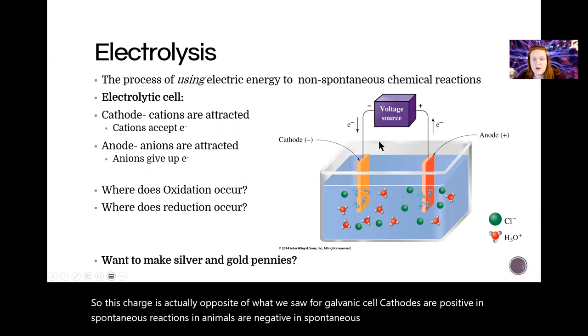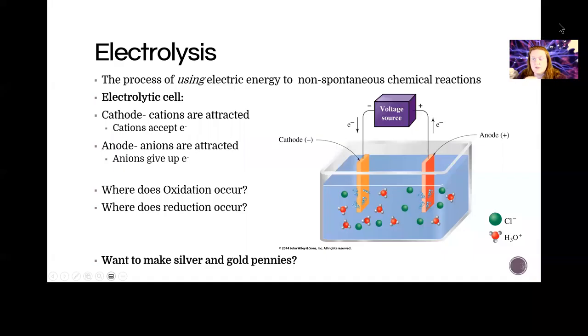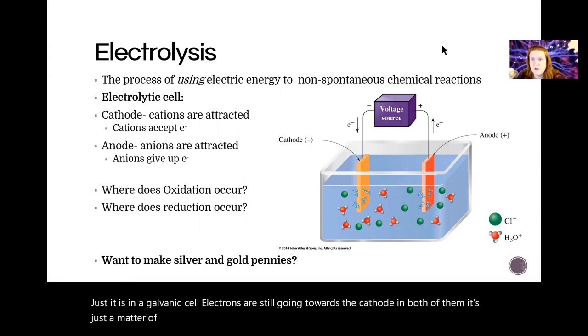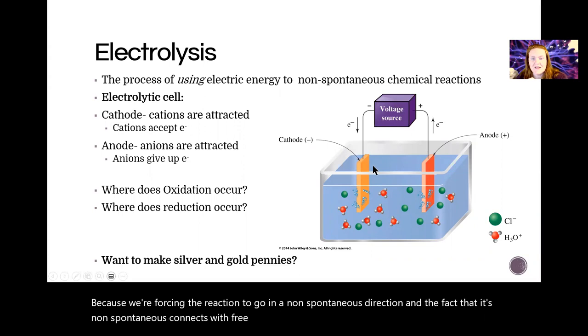The direction of electron travel is toward the cathode in an electrolytic cell, just like it is in a galvanic cell. The electrons are still going towards the cathode in both of them. It's just a matter of the charges being different because we're forcing the reaction to go in a non-spontaneous direction. And the fact that it's non-spontaneous connects with free energy, right? So we would expect the delta G of electrolysis to be positive and the delta G of voltaic cells to be negative.